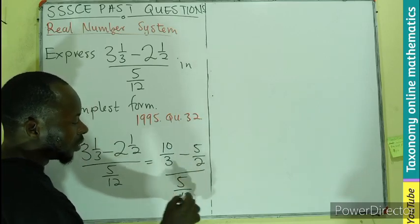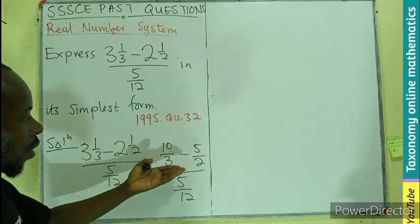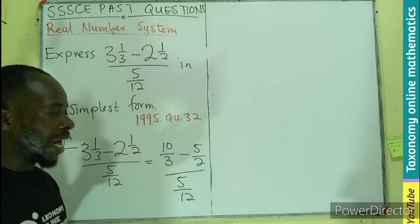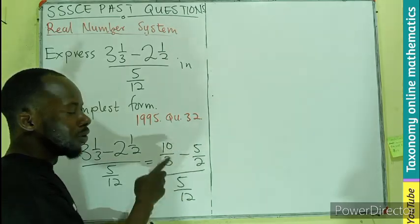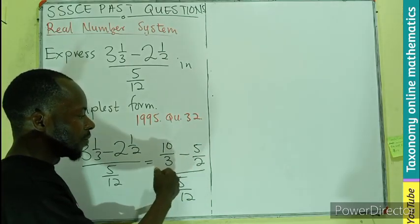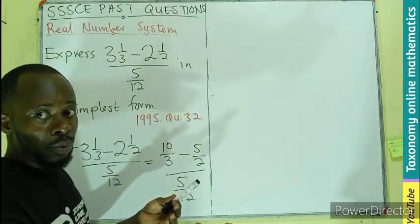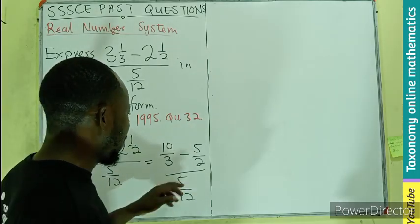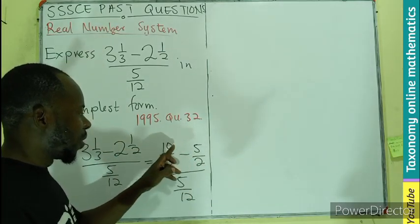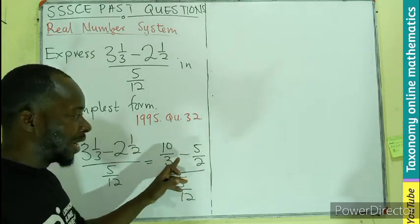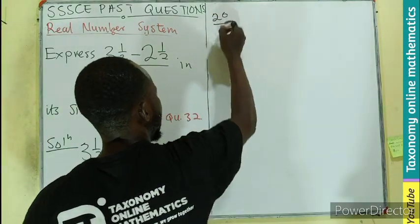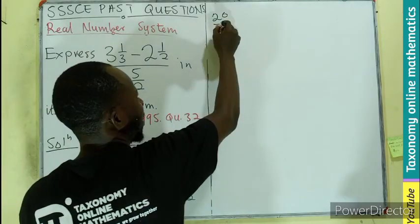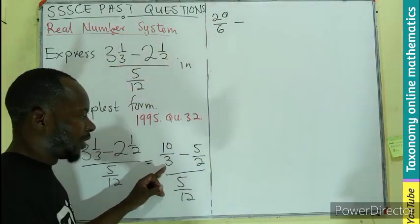We are going to solve this part as our numerator looking for the LCM, or we can cross multiply using the denominators. They don't have any multiple to cancel, so I'll be having these two multiplying the numerator and the denominator, that will give me 20 divided by 6 minus this denominator will also multiply both the numerator and the denominator, that will give us 15 divided by 6.